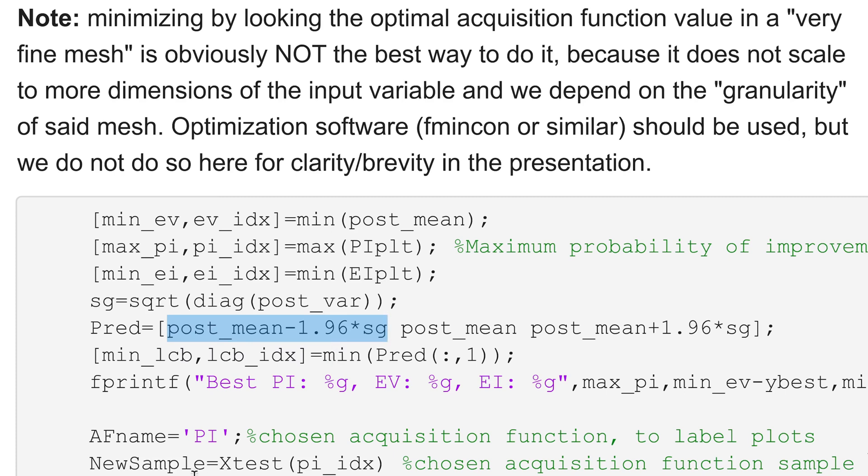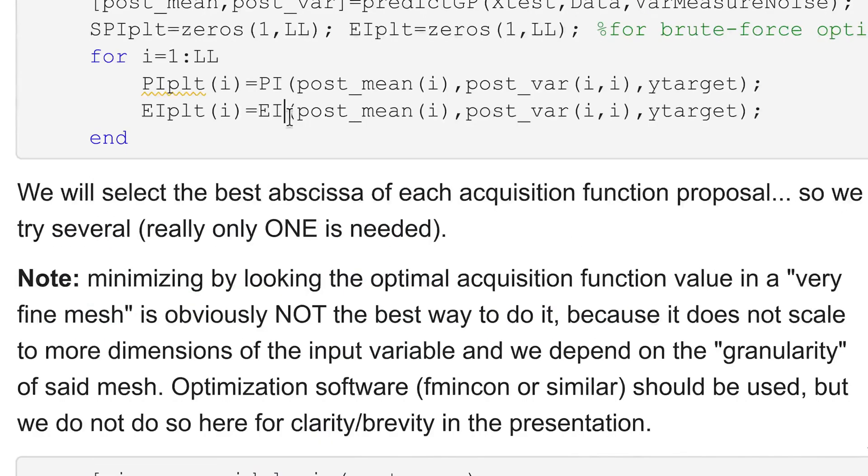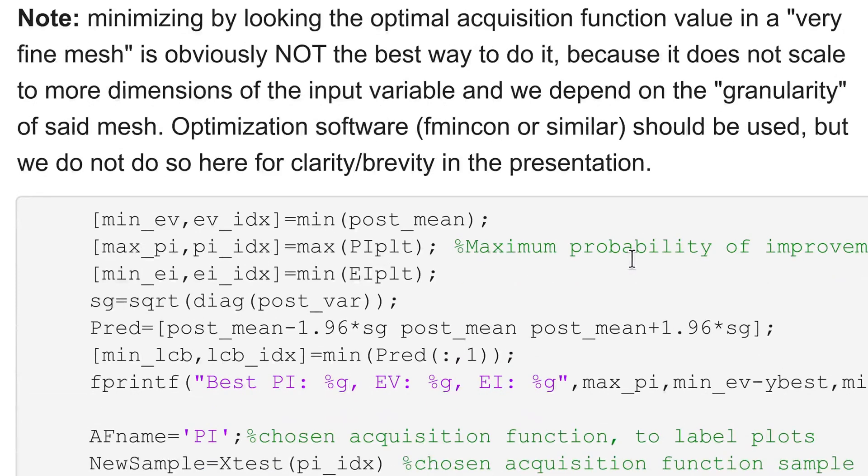Then of course if I just choose probability of improvement I can comment all this and you can examine the code to see how the four of them are computed. Maybe if you try to draft an example you can clean up a lot of lines.